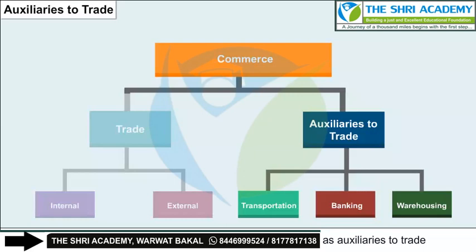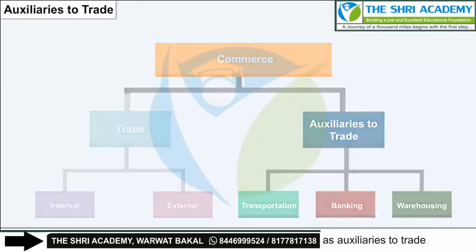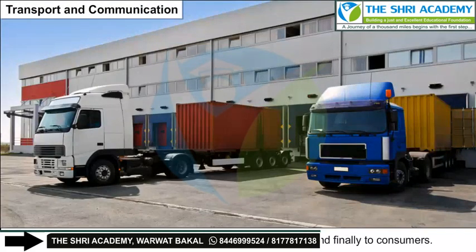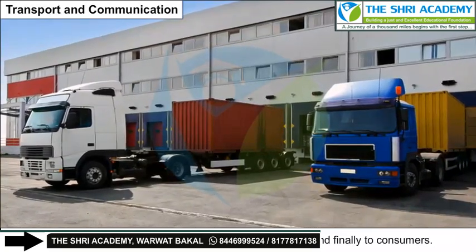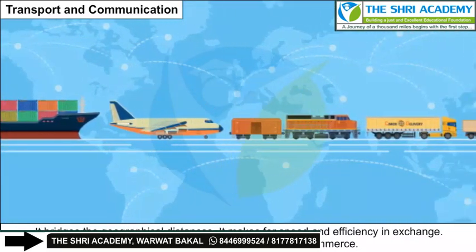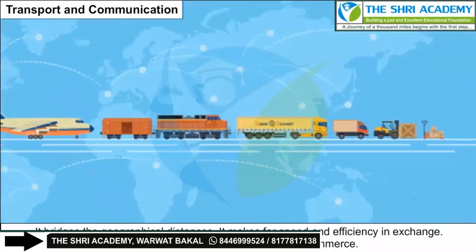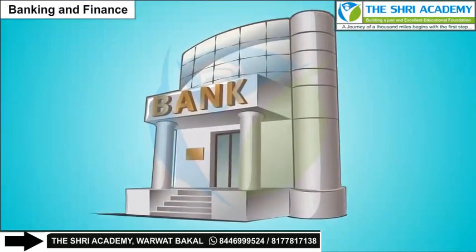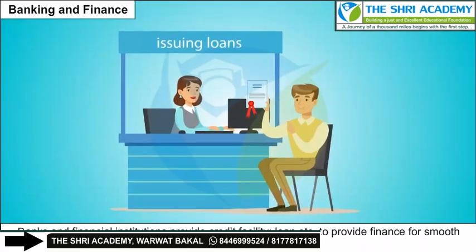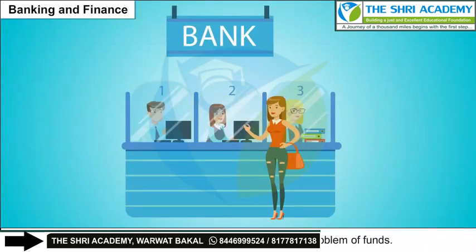Auxiliaries to trade: Activities which assist trade are known as auxiliaries to trade. These activities are generally referred to as services because they facilitate activities relating to industry and trade. Transportation carries goods from producers to traders and finally to consumers; it bridges geographical distances and makes for speed and efficiency in exchange. Banks and financial institutions provide credit facilities, loans, etc., to ensure smooth flow of business activities and help businessmen overcome the problem of funds.